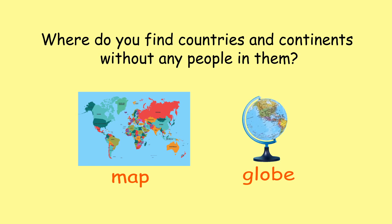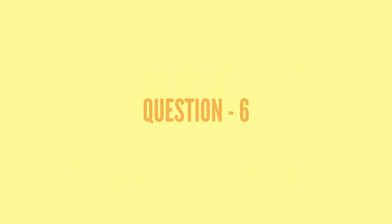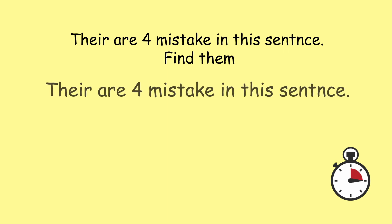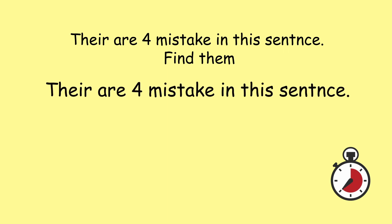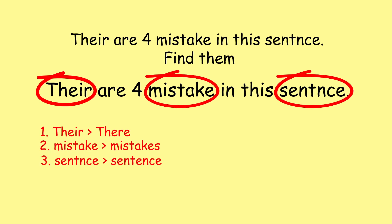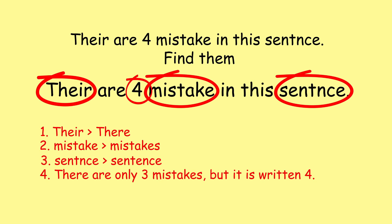There are four mistakes in this sentence — find them. You have just 10 seconds to answer. The answers: 'There' should be spelled t-h-e-r-e; 'mistakes' is misspelled; 'sentence' is misspelled. The fourth mistake is that the sentence says there are 4 mistakes, while there are actually only 3.